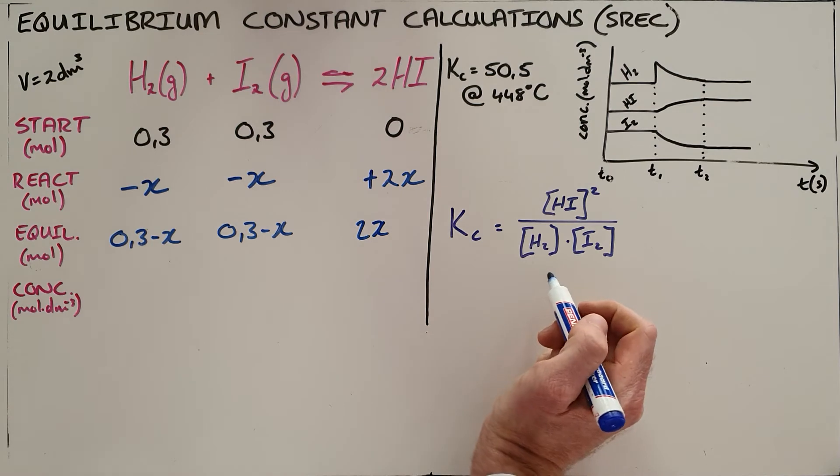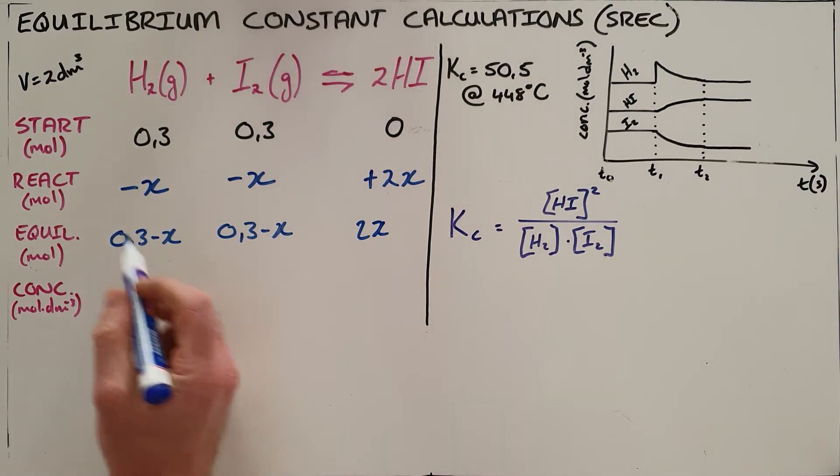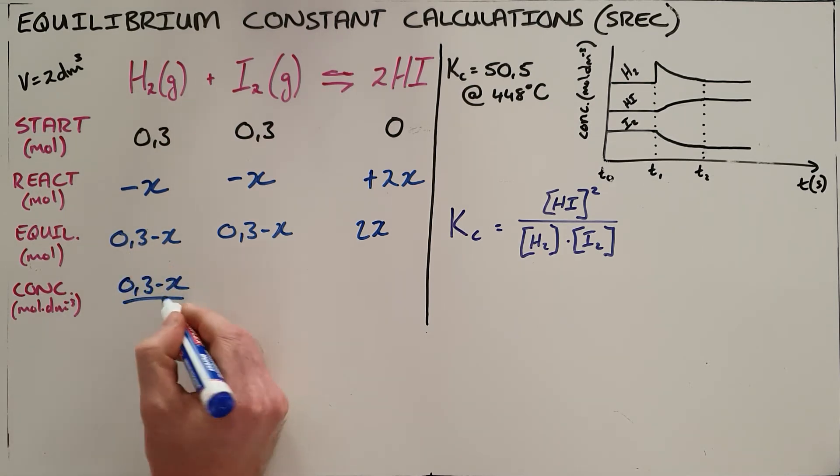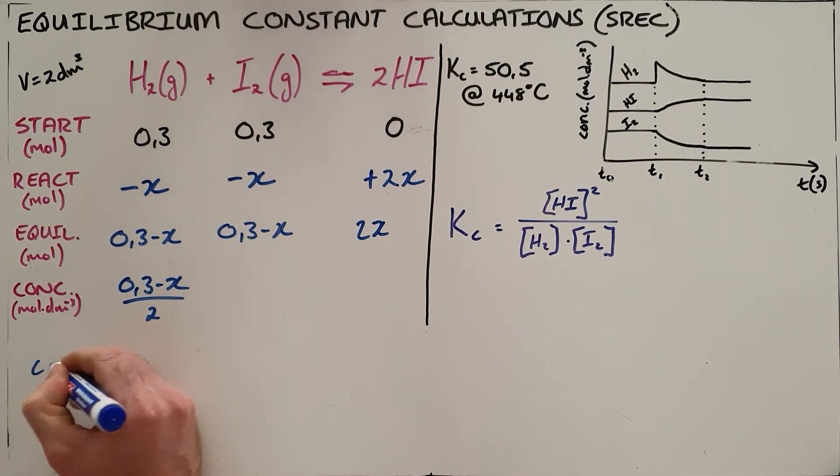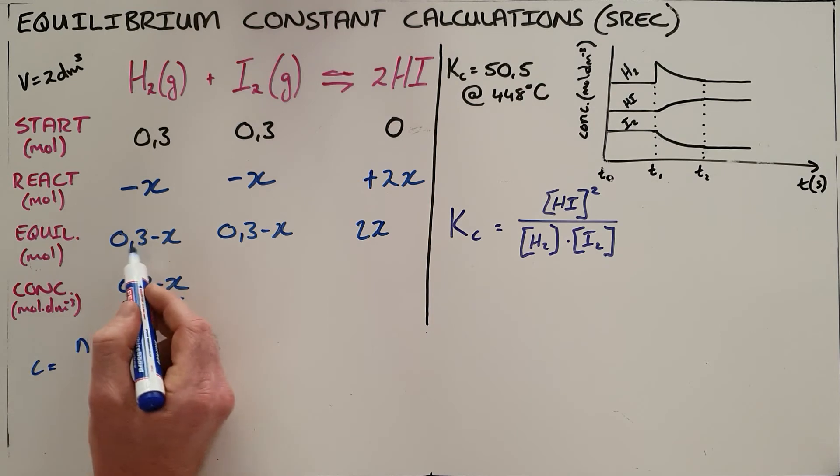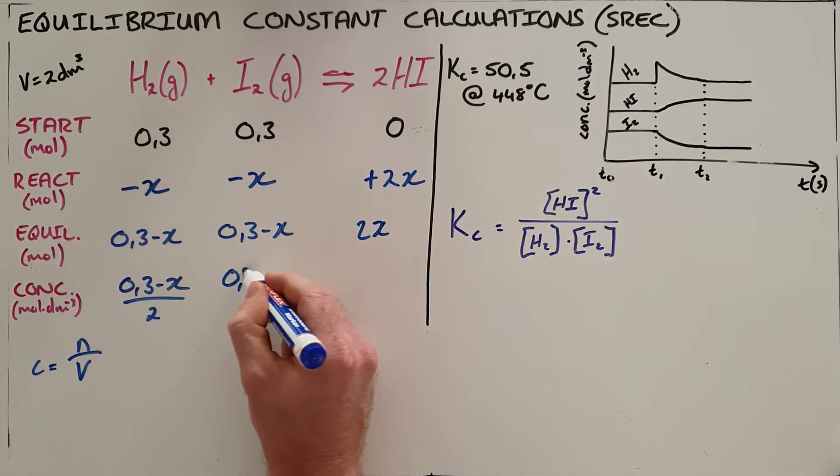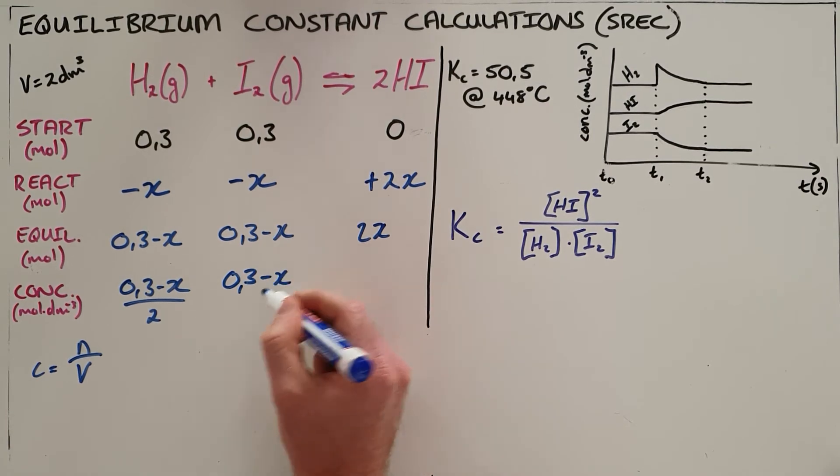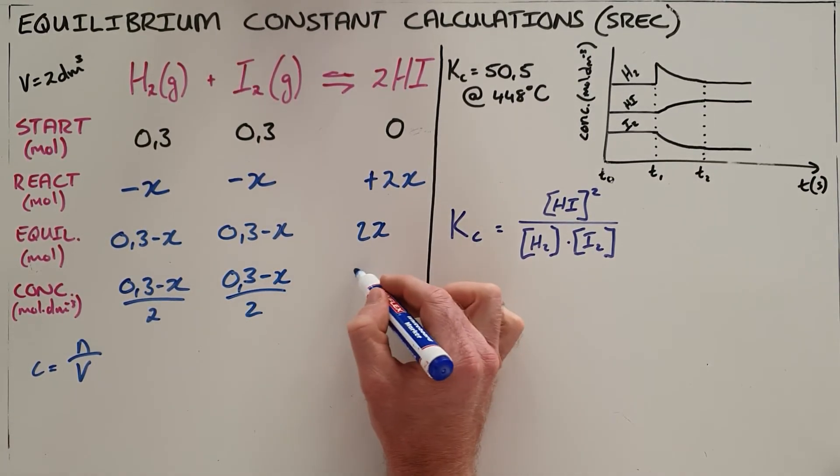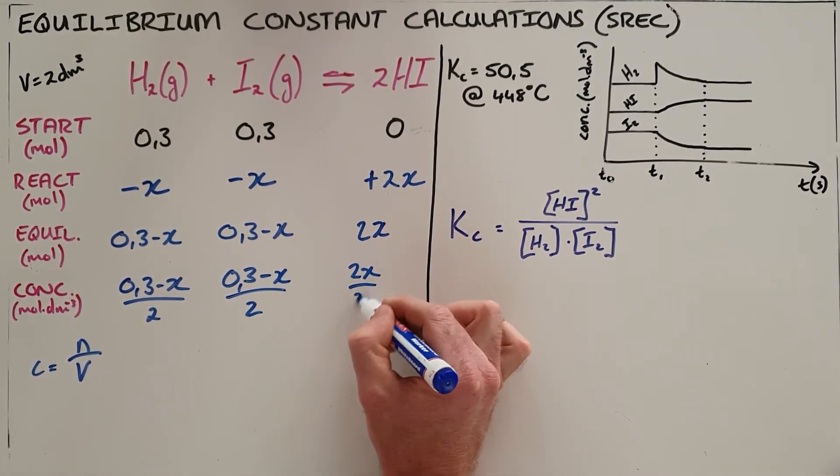To use our equilibrium constant, we need to convert to concentration. The volume is 2 cubic decimeters, so the concentration is (0.3 - X)/2, since concentration equals moles divided by volume. The same goes for iodine and hydrogen iodide.